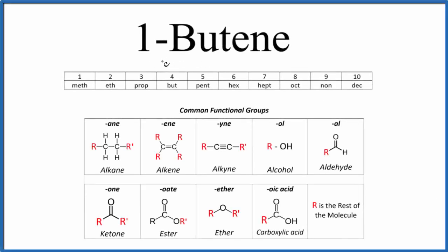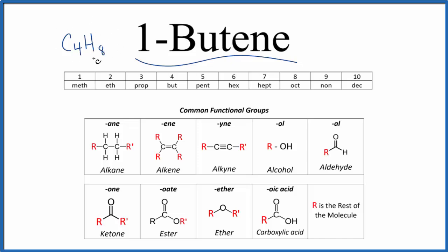Let's write the structural formula for 1-butene. The molecular formula is C4H8, but the molecular formula doesn't really tell us how these atoms are bonded together. So what we want is the structural formula.